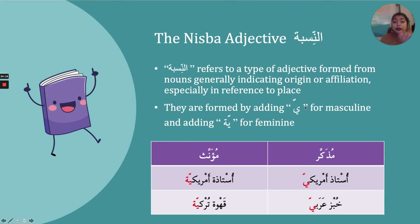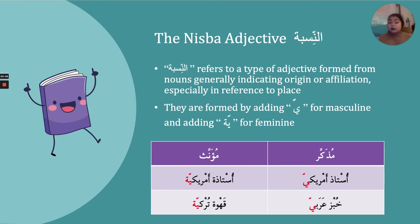When you add '-an' to America to get American, that makes it a nisba adjective. In Arabic, the way you create nisba adjectives is by taking the noun and adding a ya with shaddah — the ee sound — for the masculine, or a ya with shaddah followed by ta'marboota for the feminine. For example: أستاذ أمريكي — an American male professor; أستاذة أمريكية — an American female professor. Note: use فصحى, modern standard, not dialect.